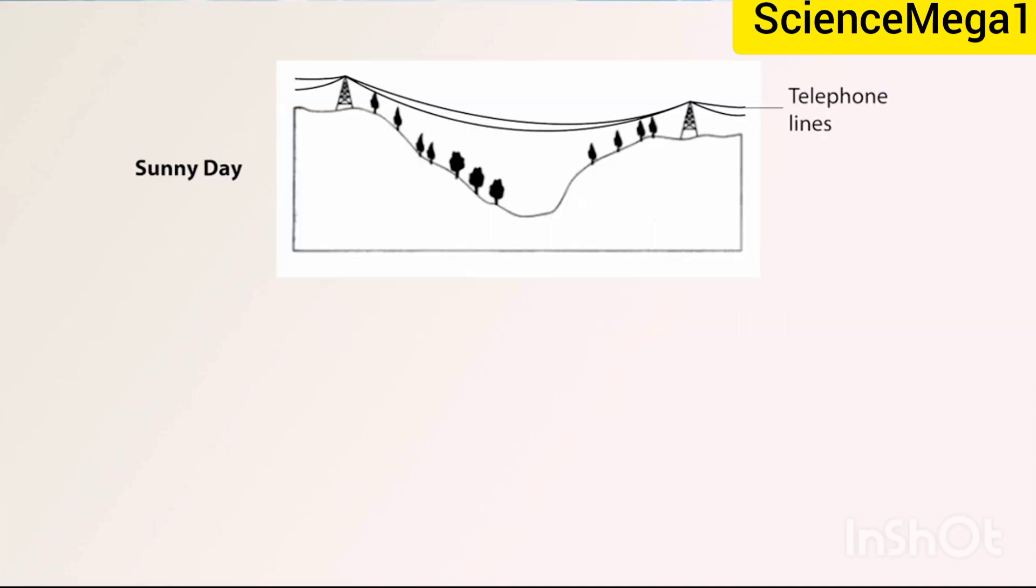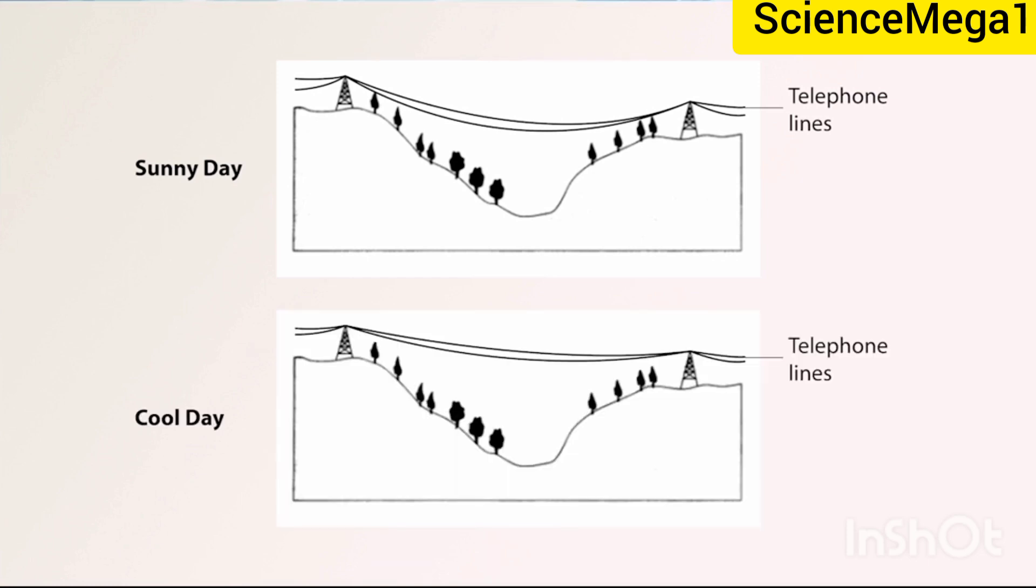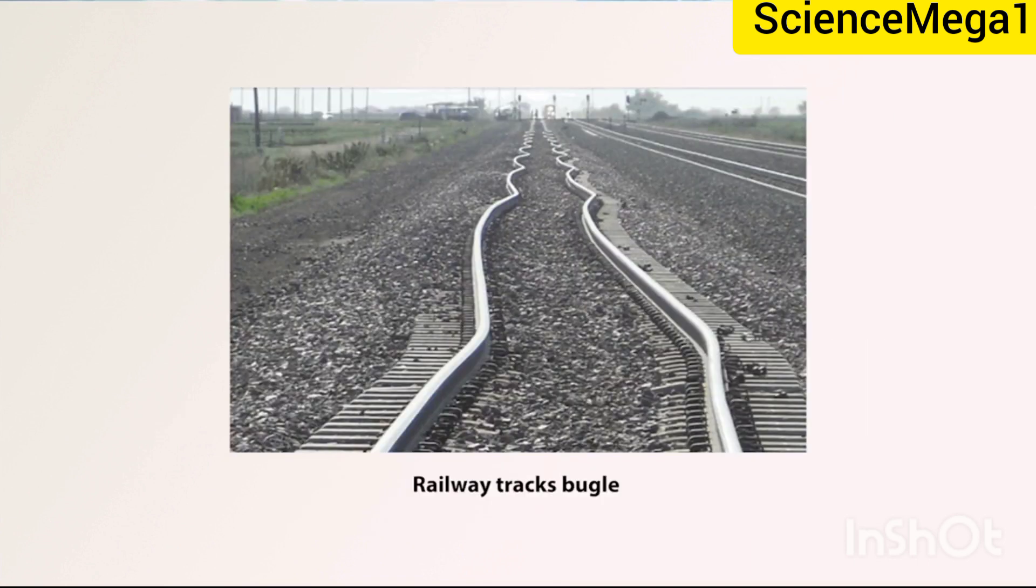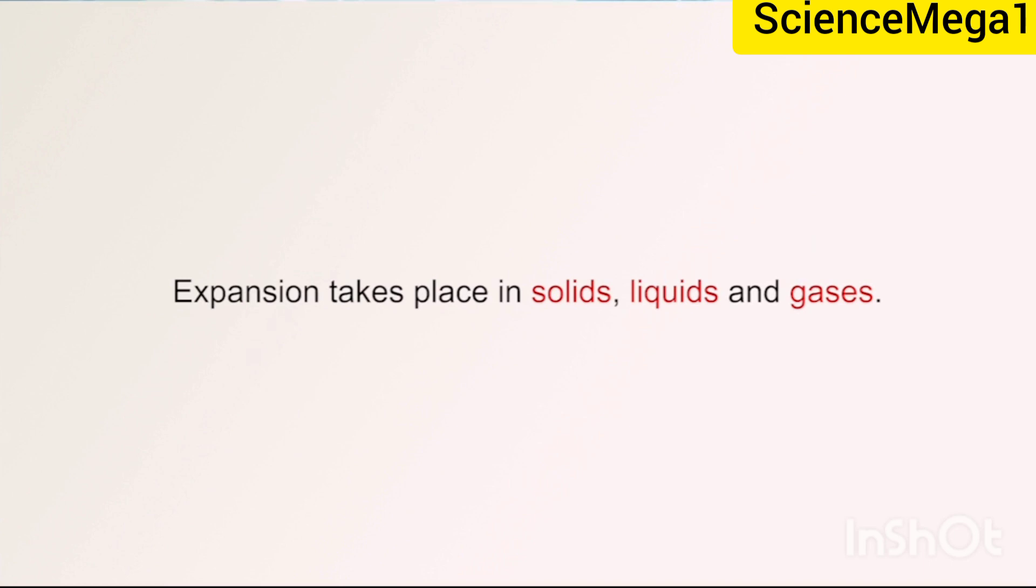Also, if you are observant, you may have noticed that on a hot day, telephone wires and electrical power lines sag more than cool days. Railway tracks buckle due to expansion. Expansion takes place in solids, liquids and gases.